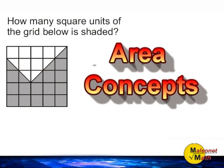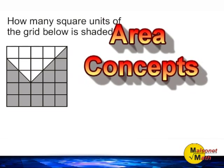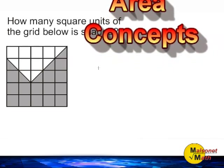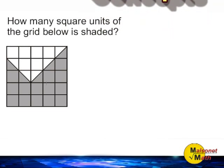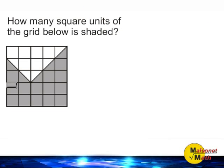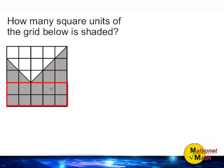This problem is asking us to figure out how many square units of the grid below is shaded. Taking a look at this section of our grid, we can see that we have ten square units covered by this area.